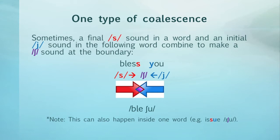Please note that this type of coalescence can also happen inside just one word, like when the S and the U combine to form a SH sound in "issue". However, since our focus is on connected speech, we're only looking at where this happens when the end of one word meets the beginning of another. If you don't understand the symbols I'm using to represent sounds here, please see the link to the interactive phonemic chart in the information box below the video.